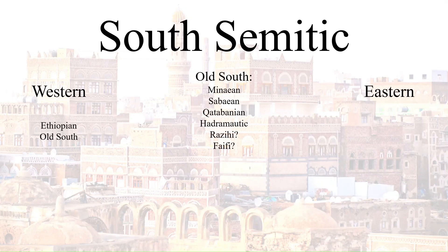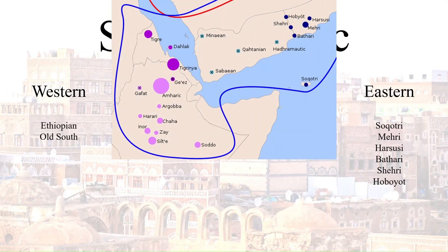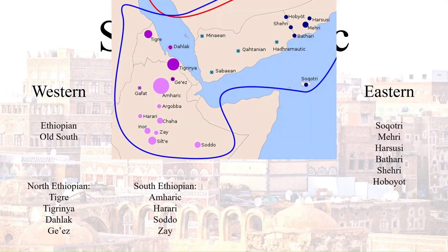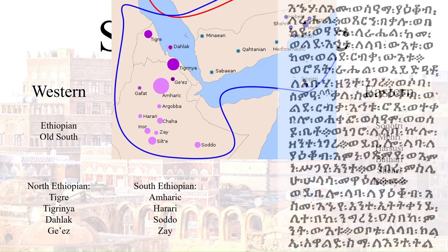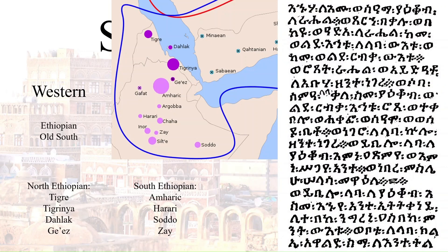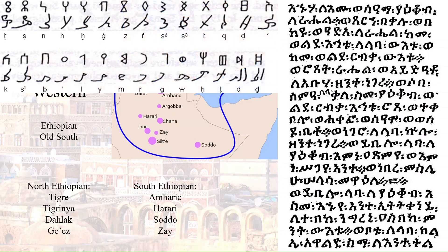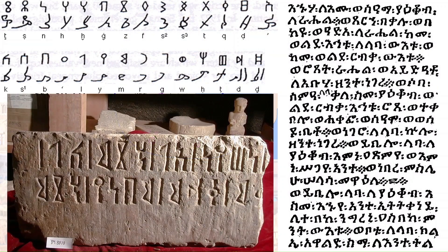The modern South Arabian languages fall into the eastern sub-sub-branch, these languages being Soqotri, which we talked about before, Mehri, Harsusi, Batari, Shehri, and Huboyot. I'd definitely like to go into more detail on these in my next Forgotten Semitic Languages video. The Ethiopian languages are furthermore split in twain between a North-South division. Some of these languages are very widely spoken, with millions of speakers in Ethiopia and Eritrea. Ethiopian languages are usually known for typically being written in the Ge'ez script — Ge'ez being a now-dead North Ethiopian language that holds a similar status to Latin in Ethiopian society, being the traditional language of the Old Ethiopian Empire. The modern South Arabian languages are written in a modified form of the Arabic script, unsurprisingly given where they are spoken.